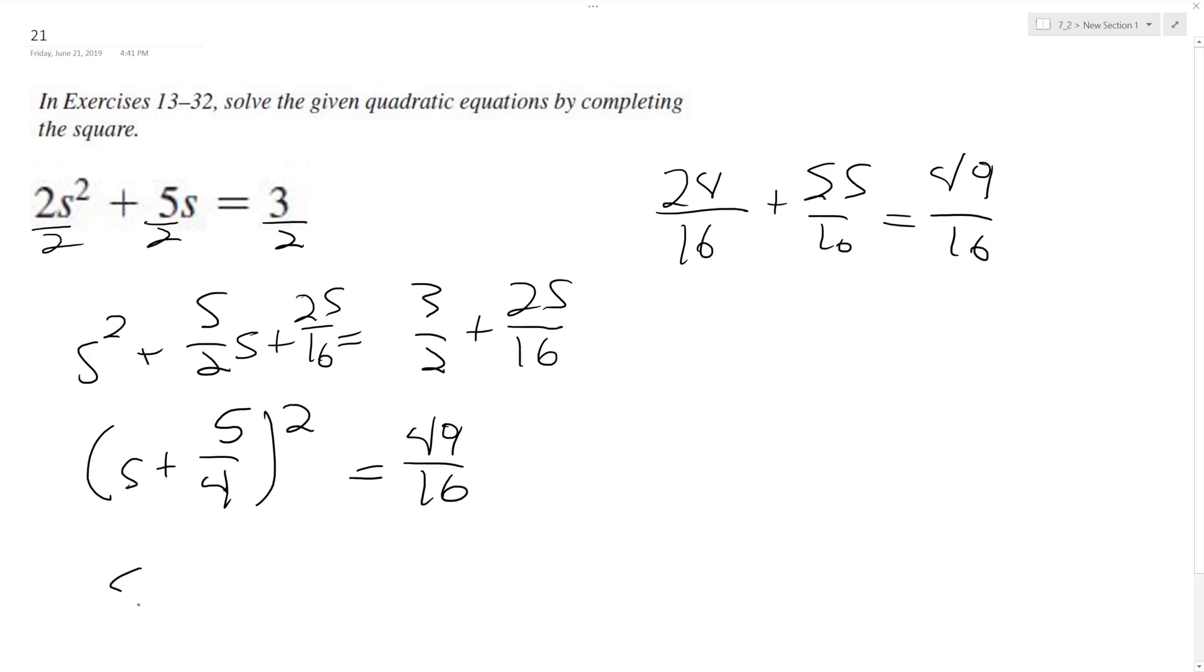So take the square root of both sides. We end up with s plus 5 over 4 is equal to the square root of this, plus or minus 7 over 4. Subtract 5 over 4 from both sides.